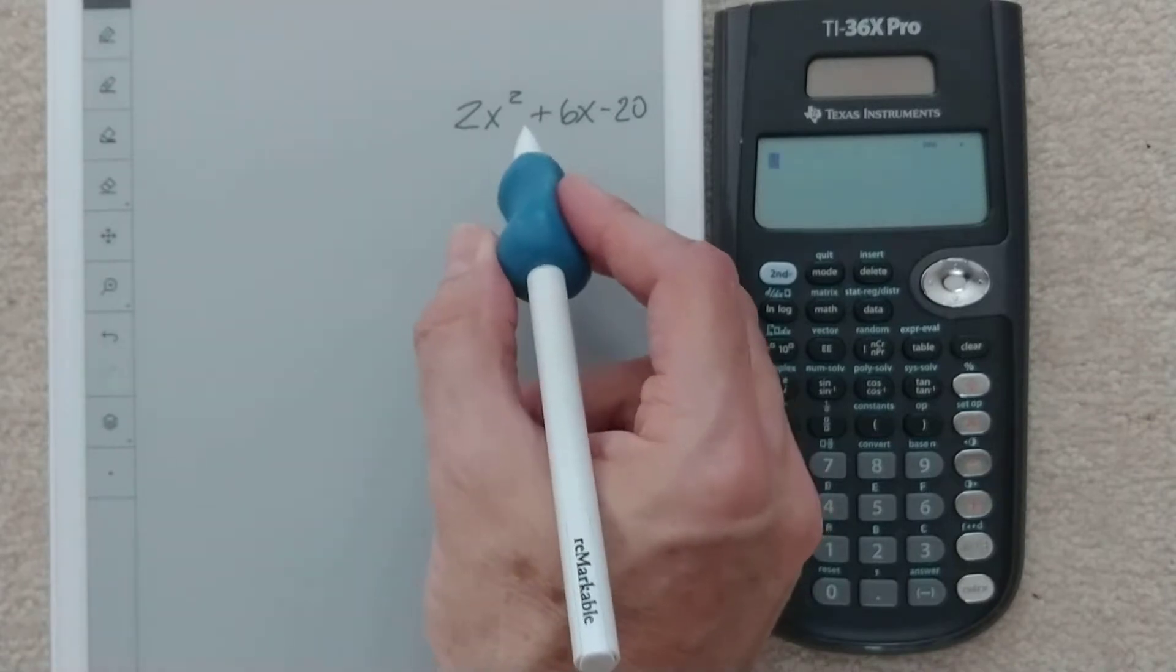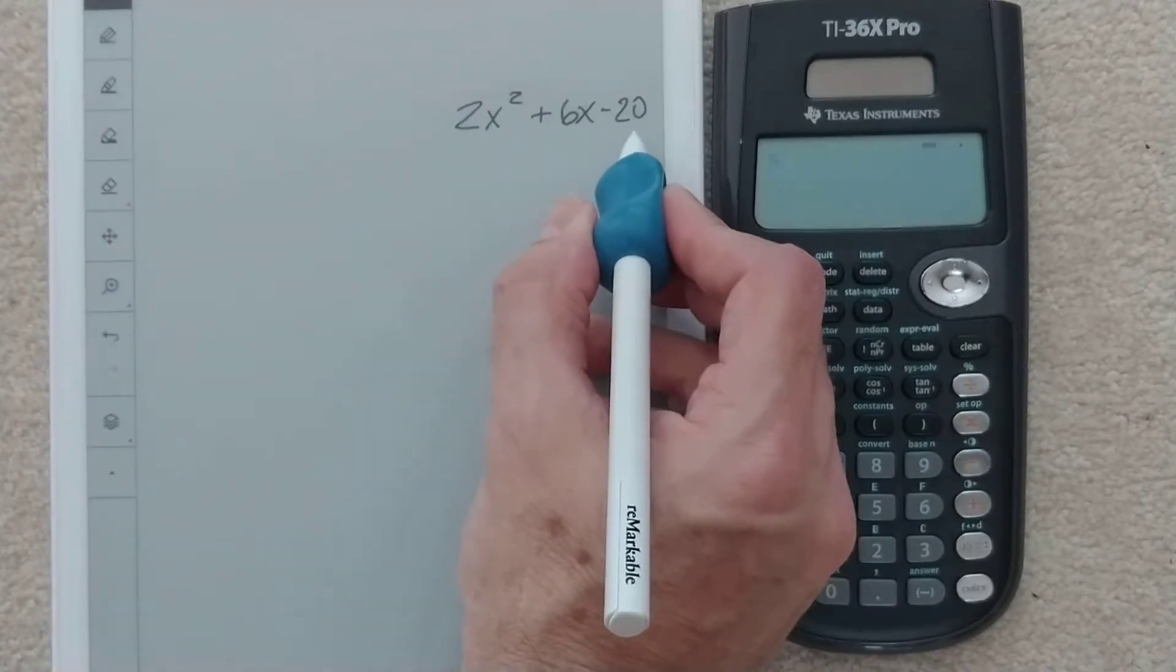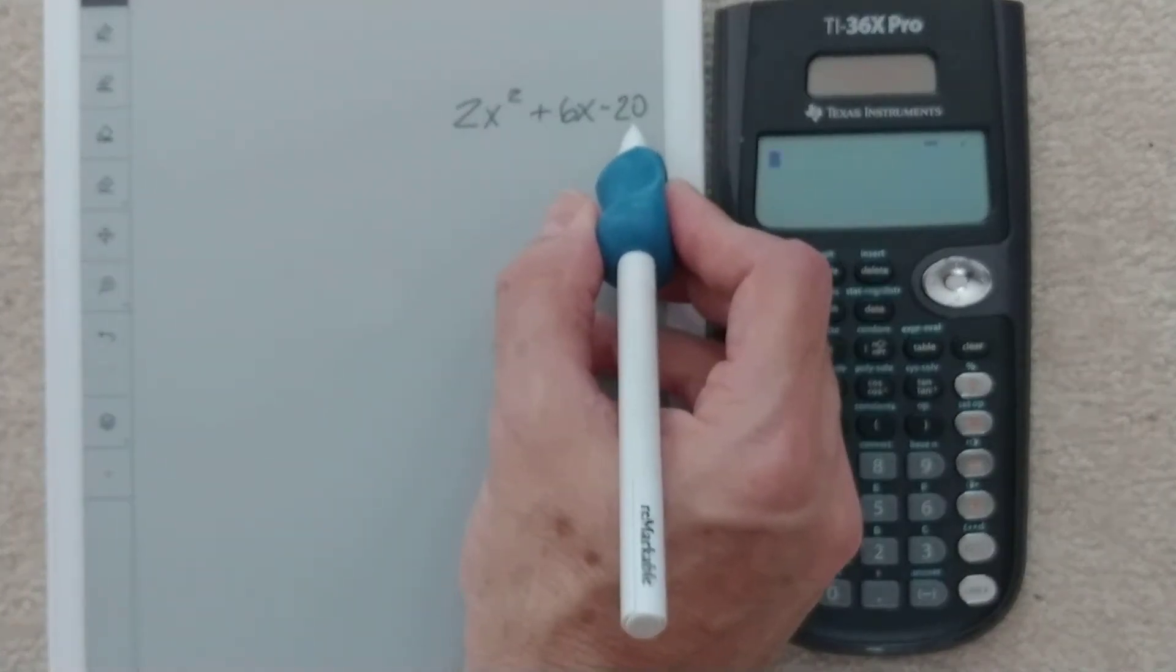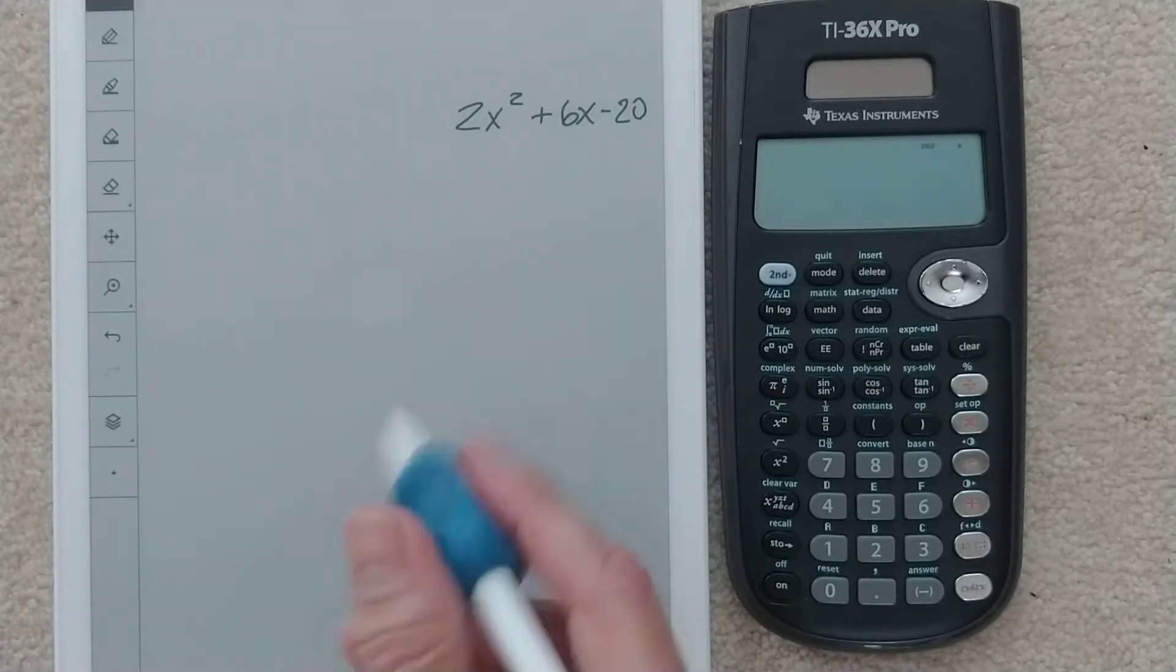Since this can be divided by 2, and this can be divided by 2, and this is also divisible by 2—in other words, they're even numbers—I can take a 2 out.